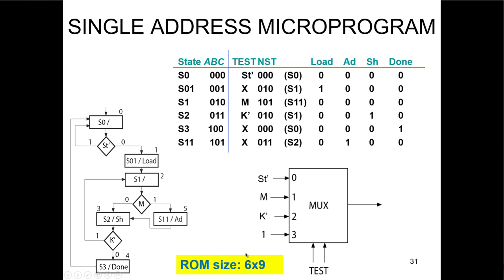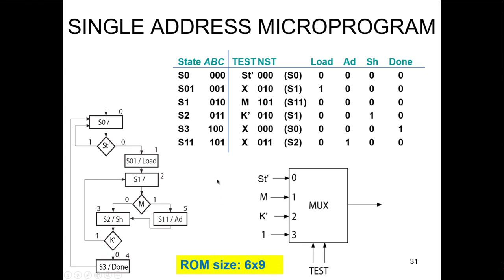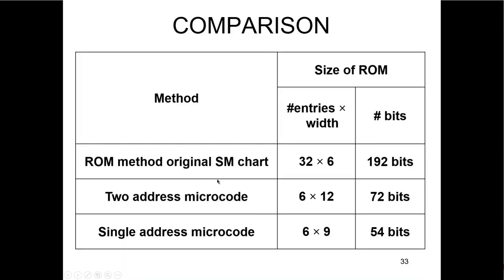This gives a ROM size of 6×9. Looking at the comparison: the ROM method off the original SM chart gives 32×6; two-address microcode gives 6×12; single-address microcode gives 6×9. Pretty cool — you can really shrink your ROM.